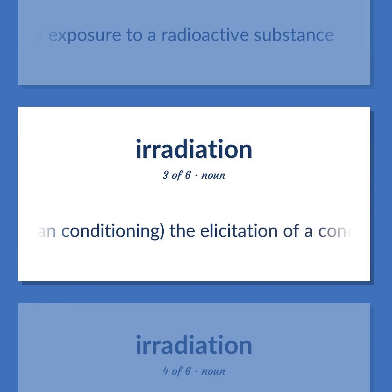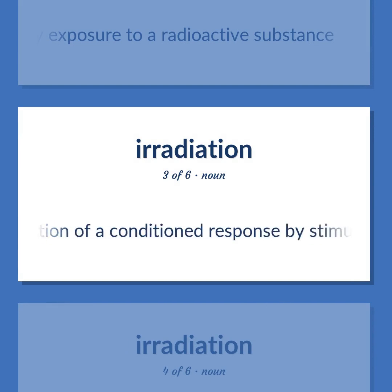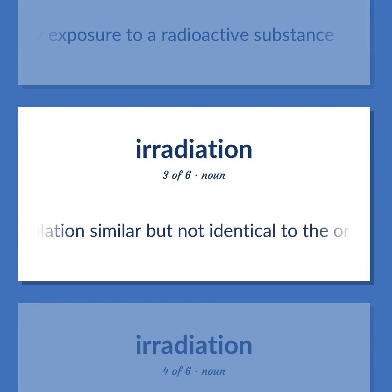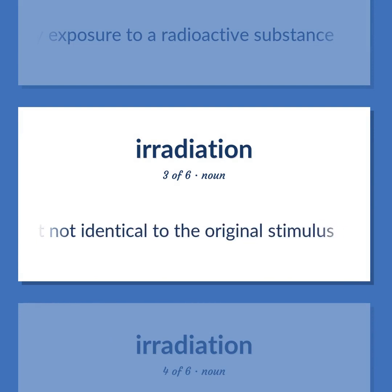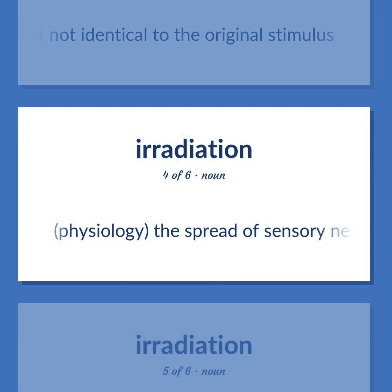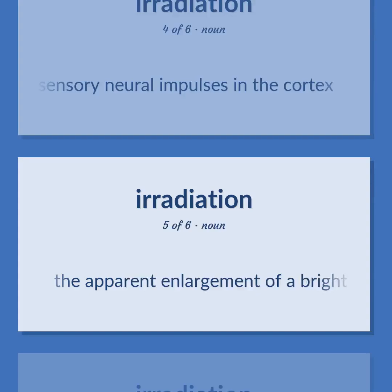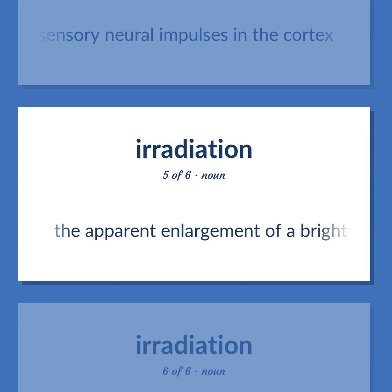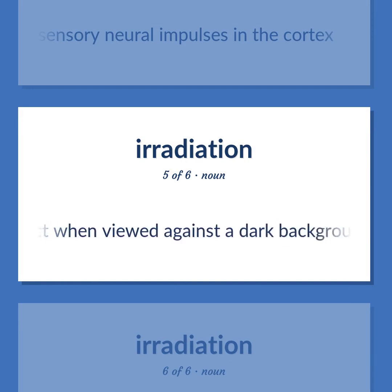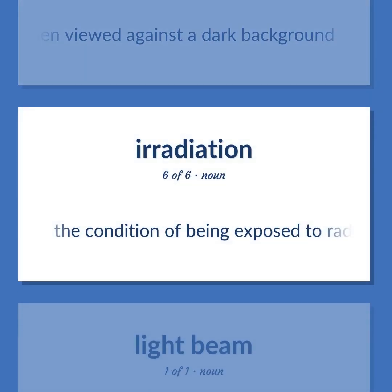Pavlovian conditioning: the elicitation of a conditioned response by stimulation similar but not identical to the original stimulus. Physiology: the spread of sensory neural impulses in the cortex. The apparent enlargement of a bright object when viewed against a dark background. The condition of being exposed to radiation.